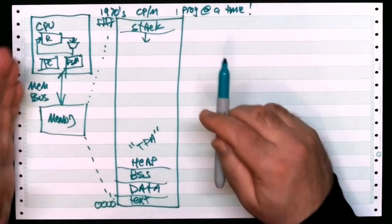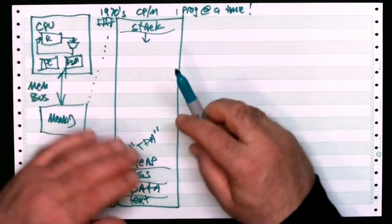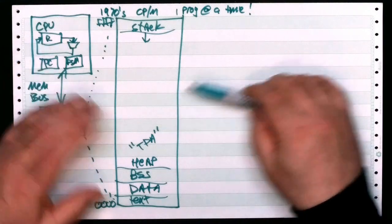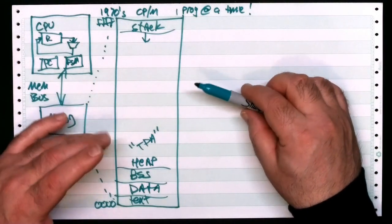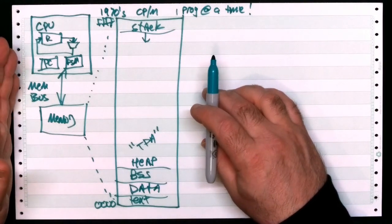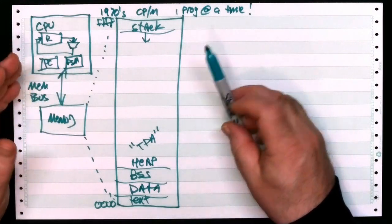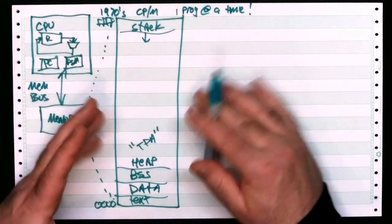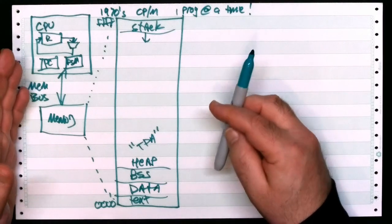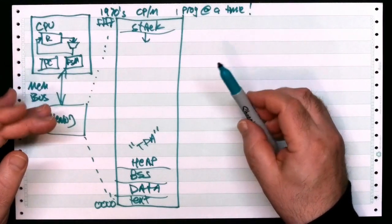This style of computing was the predominant method of all personal computing. Mainframe computing had already moved on to what we're familiar with now - multiple processes and stuff like that. But personal computing, this is all we had. And mainframe computing in the 1960s was a lot like this too. So personal computing was about 15 to 20 years lagging behind the mainframe architectures at the time.